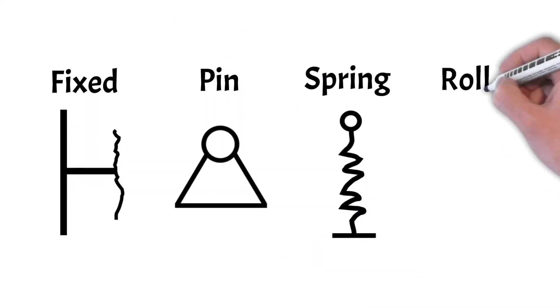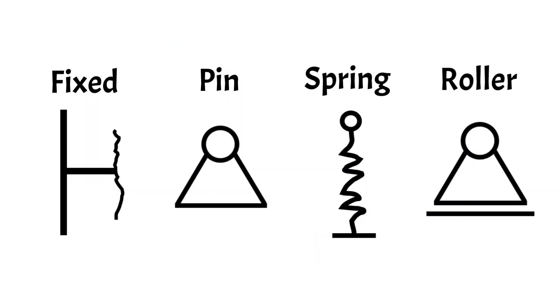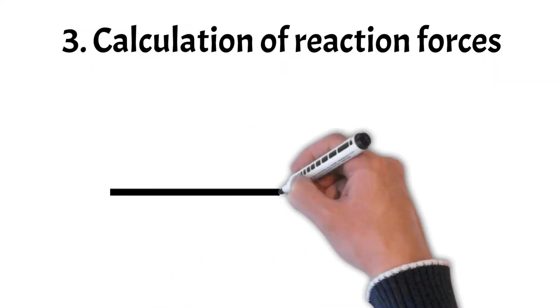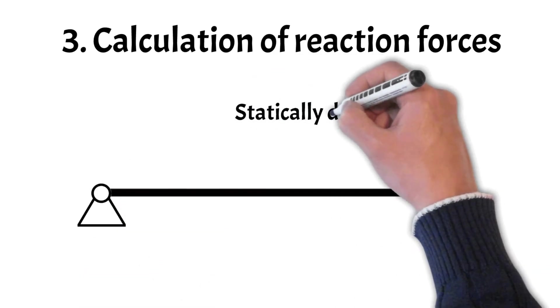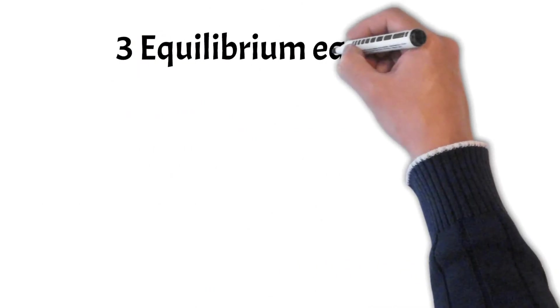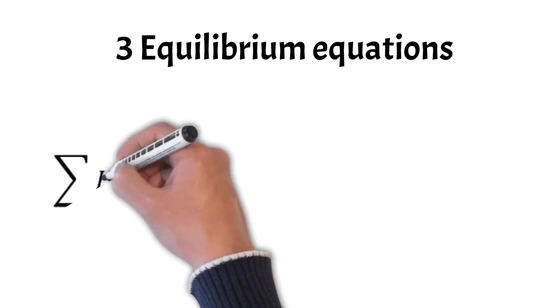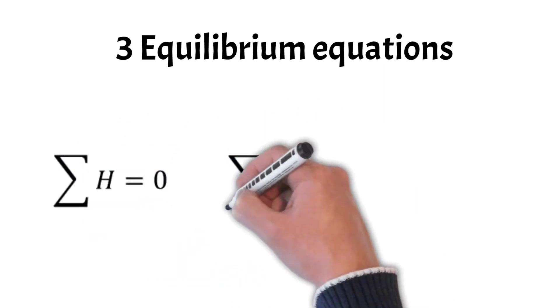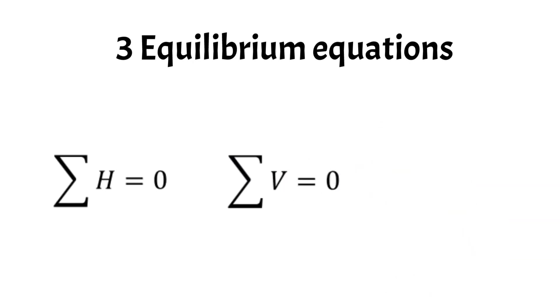Now that we showed all the different types of supports and explained them by a lot of different examples, the next step is to calculate the reaction forces. In this video, we'll cover how to calculate the reaction forces for statically determinate structures. For determinate static systems, we calculate the reaction forces with the three equilibrium equations, which say that the sum of all horizontal loads and forces are equal to zero, the sum of all vertical loads and forces are equal to zero, and the sum of all moments are equal to zero.